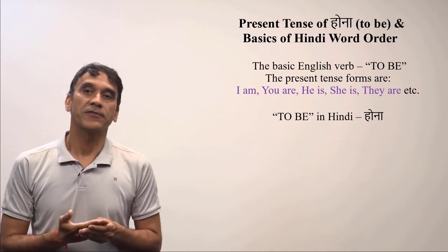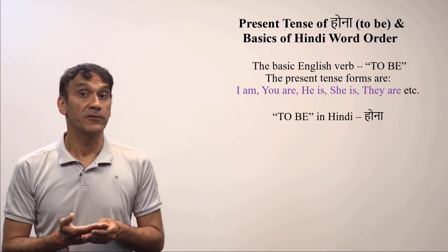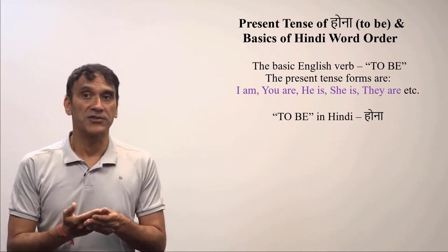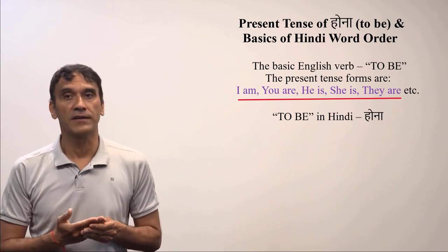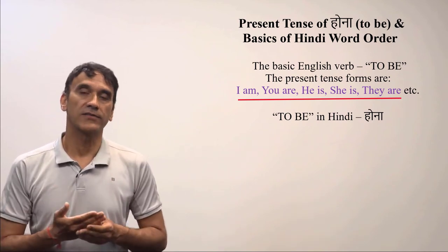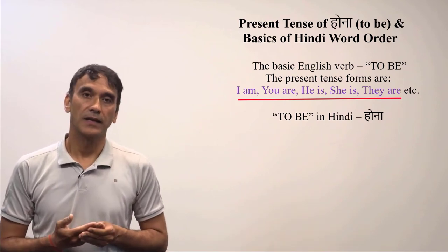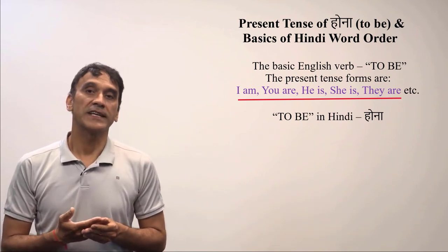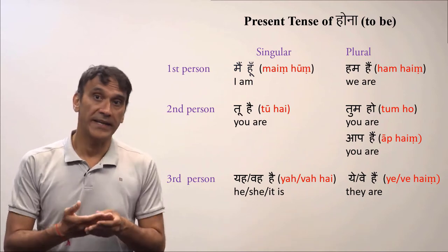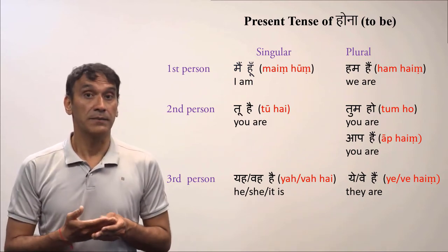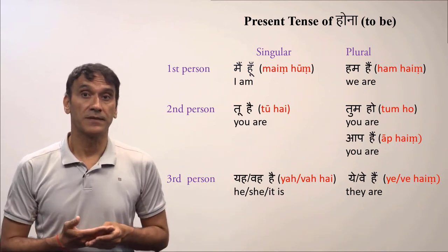The present tense form of the basic verb 'to be' in English is: I am, you are, we are, she is, etc. Let's now take the basic verb Hona — 'to be' in Hindi — and look at its present tense forms.